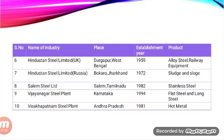The next industry is the automobile industry. The first automobile industry in India was started in 1947, and only after independence has this industry developed greatly. The first unit was the Premier Automobiles Limited, started at Kurla in Mumbai, followed by the Hindustan Motors Limited at Uttarpara, Kolkata. India now stands as the 7th largest producer of automobiles. Major centres include Mumbai, Chennai, Jamshedpur, Jabalpur, and Kolkata.